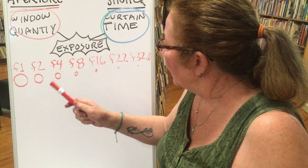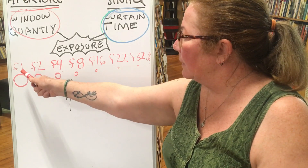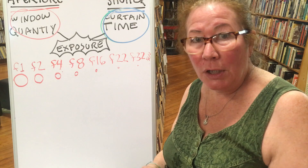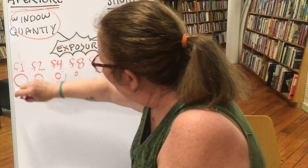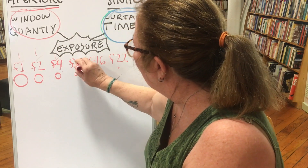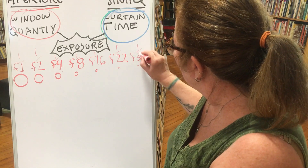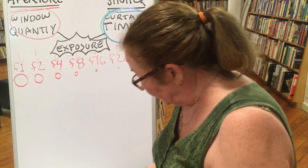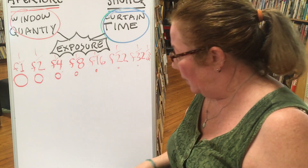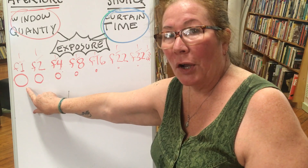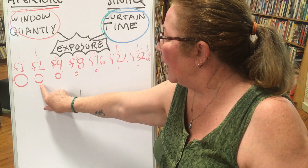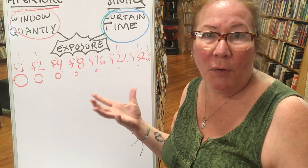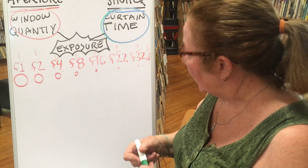Why is it that the smaller the number, the larger the opening? Easy — they're fractions. If you did okay with fractions in grade school, you've got it. One over one is the biggest, then one-half, one-fourth, one-eighth, one-sixteenth, one-twenty-second, one-thirty-second, one-sixty-fourth. That's why the smallest number is the largest size — it's the whole pie — and as you go down it cuts in half each time until you reach the smallest pinhole possible.